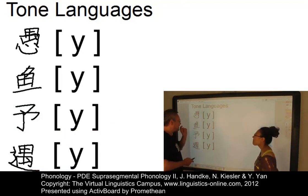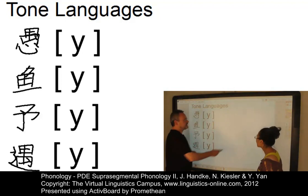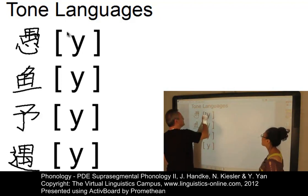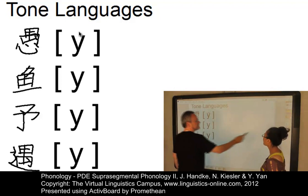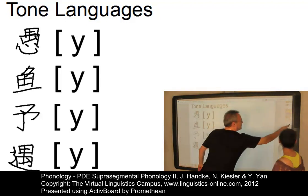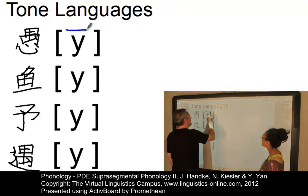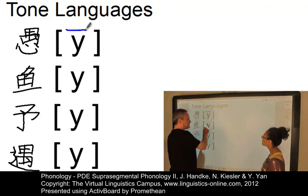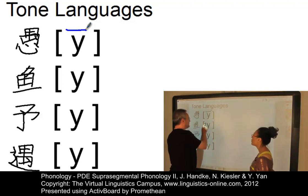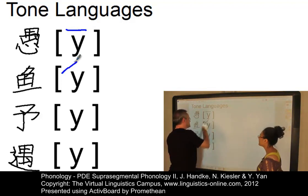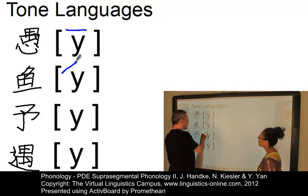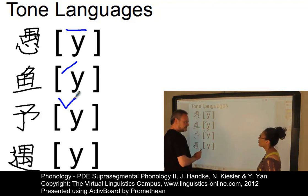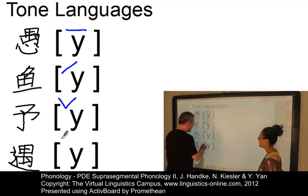Perhaps I can identify some tones already. The first tone is level — yes, that's right. The second one — 'yu' — that is a rise, a rising tone. The third one — 'yu' — that is fall-rise, yes. So I'm not that bad. And the last one — 'yu' — a fall. Yes.